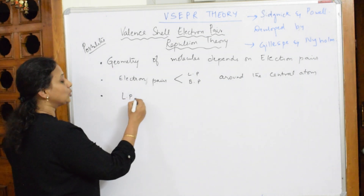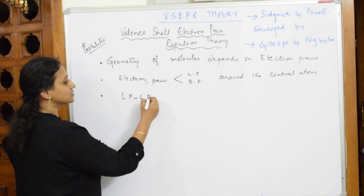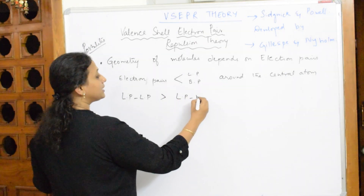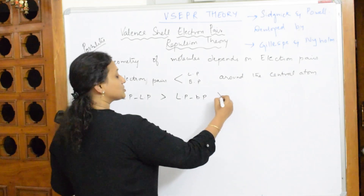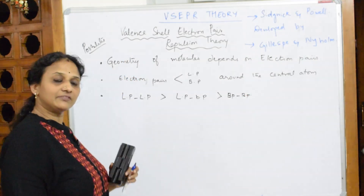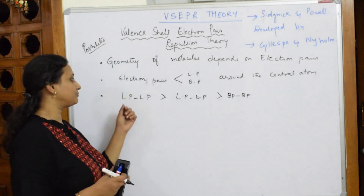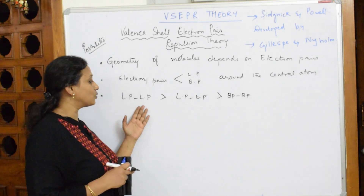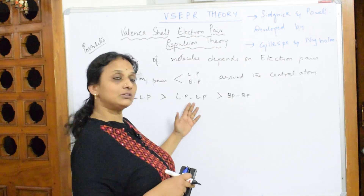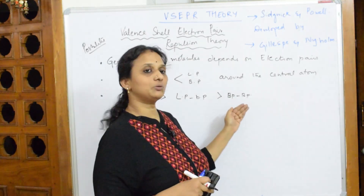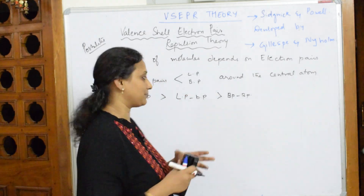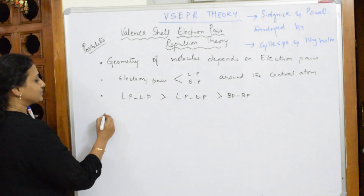Always remember the order of repulsions: lone pair–lone pair repulsions are the strongest, greater than lone pair–bond pair repulsions, which are in turn greater than bond pair–bond pair repulsions. When a molecule has more lone pairs, those repulsions are stronger and affect the molecule's geometry. Bond pair–bond pair interaction is the safest, giving the molecule a proper geometry or shape.